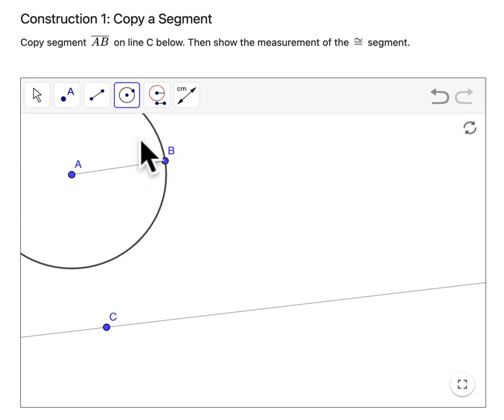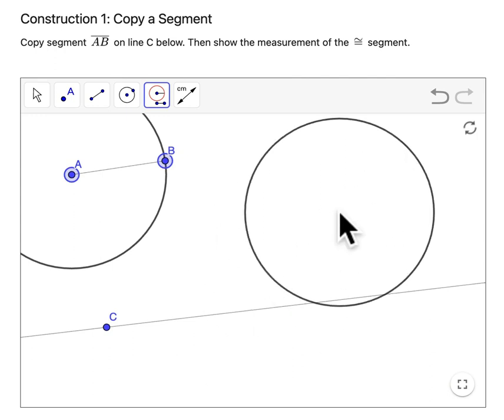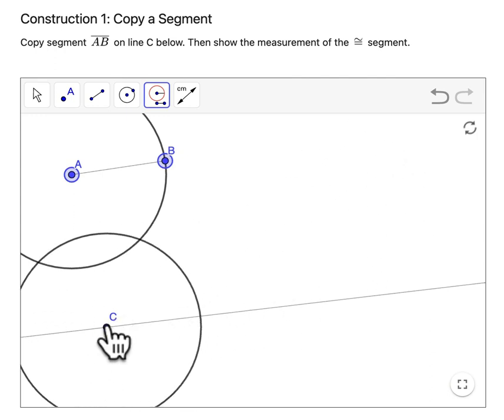Here I'm going to do the same thing, just with a circle. Then I'm going to grab my compass tool and click from B to A, so center of the circle last. And then I have this compass length that I can now drag around. I'm going to drag it over here to point C.